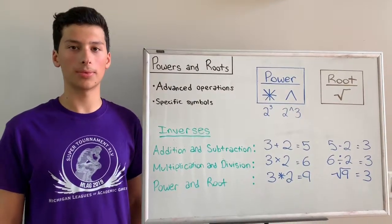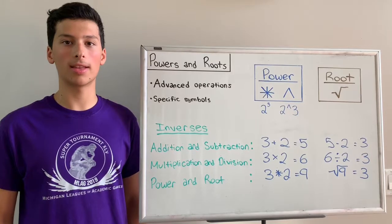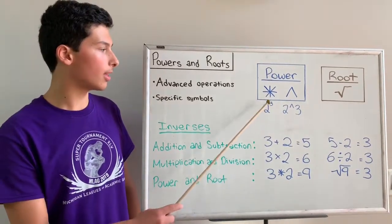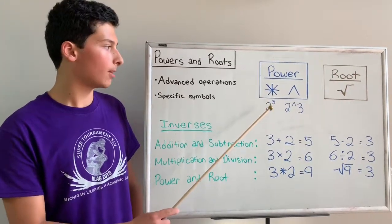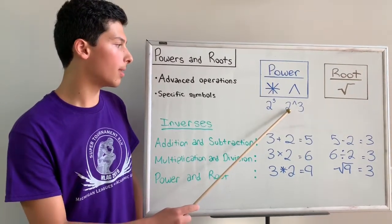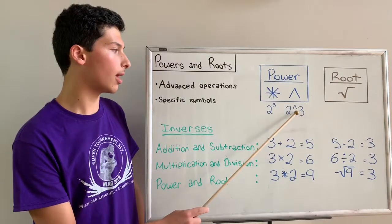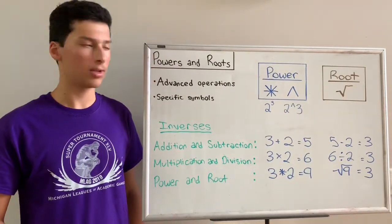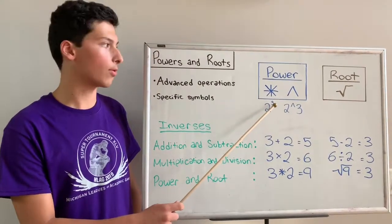This video is on power and root. These operations are more complicated than addition or subtraction. The symbol for a power is the star or a caret depending on which one you're looking at. If you're playing academic games, a power would be written in this notation with the base on the left, the power in the middle, and the exponent on the right. In normal mathematics, a power might be written as 2 and then the 3 in the upper right corner.